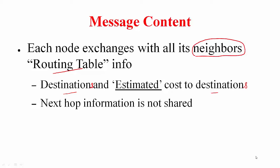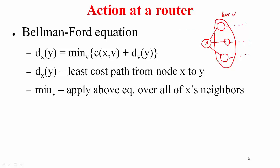Once a node receives a message, what should it do? This action is based on the Bellman-Ford equation. Suppose dx,y represents the least cost path from node x to y, and let V be the set of x's neighbors. The least cost path from x to y is given by taking the minimum over all neighbors v of: the cost C(x,v) plus the least cost path from that neighbor v to the destination y. Taking this minimum over all such possibilities yields the least cost path from node x to destination y.